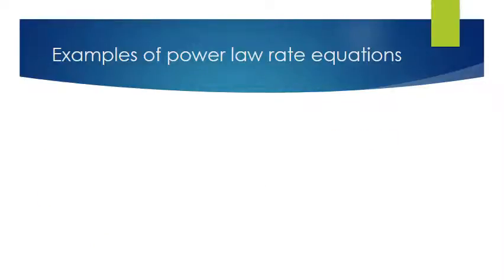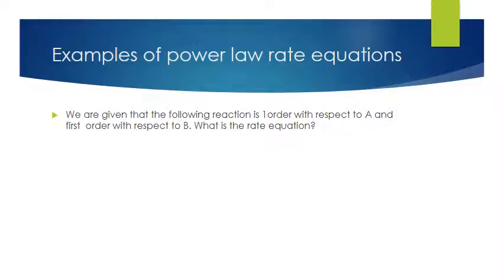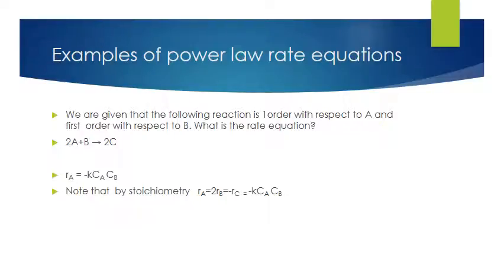Let's look at another power law rate equation example. We are given a reaction that is first order with respect to A and first order with respect to B, with stoichiometry of two moles of A reacting with one mole of B to give two moles of C. The rate of formation of A is minus K times C_A to the power one times C_B to the power one, giving Rate_A equals minus K·C_A·C_B. By stoichiometry, the rate of reaction of A equals twice the rate of reaction of B, and equals minus the rate of formation of C, which equals minus K·C_A·C_B.